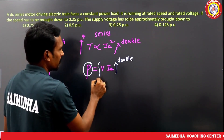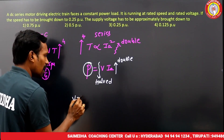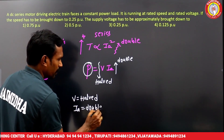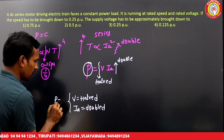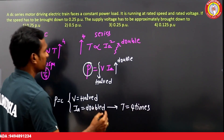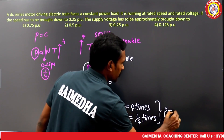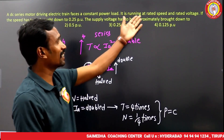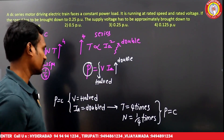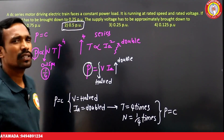When voltage is halved and current is doubled, power remains constant. With current doubled, torque increases by 4 times. With torque 4 times and speed reduced to 1/4, power is again constant. Therefore, the supply voltage must be reduced to 0.5 per unit.